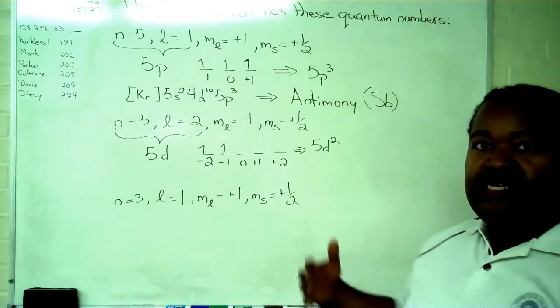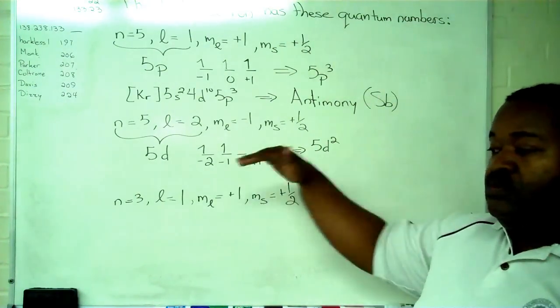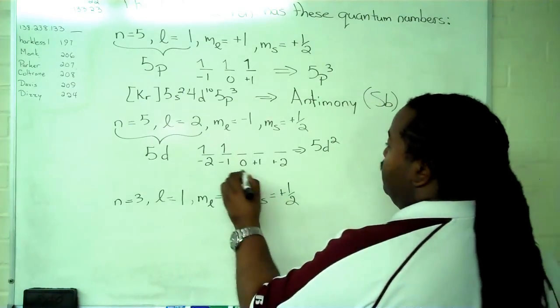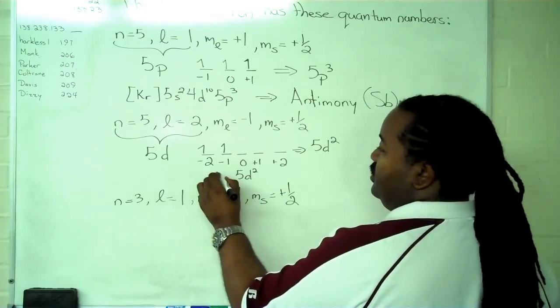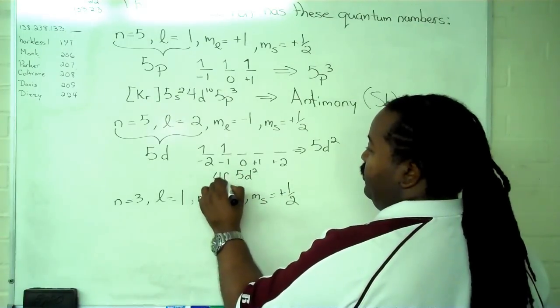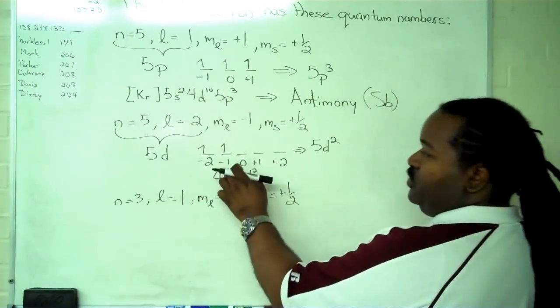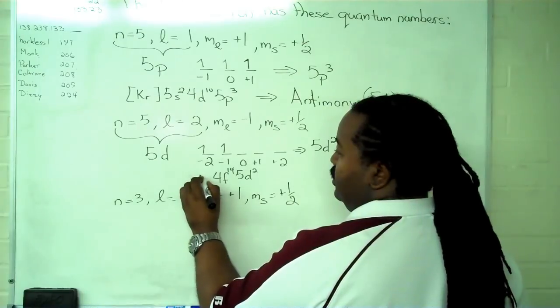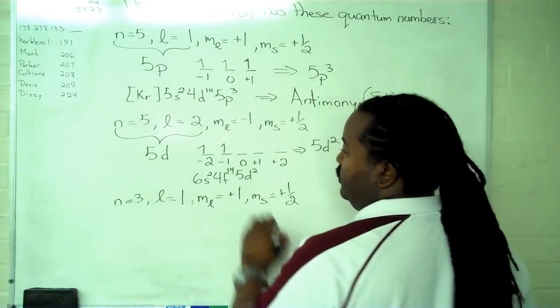And now I can use the Aufbau principle to back out everything else that I would have. So what comes before 5d is a 4f, completely filled with 14, and then a 6s, completely filled with 2.